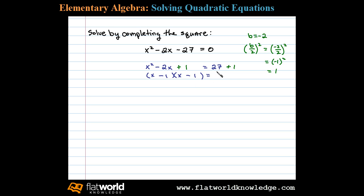This equals 28, so in other words we have x minus 1 squared equals 28, which we can solve by extracting the roots. Let's apply the square root property to both sides.